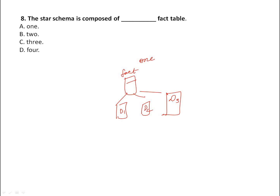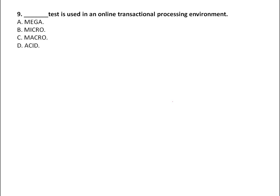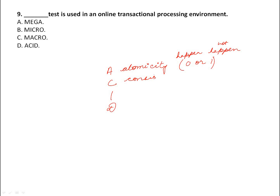The next question: what is used in an online transaction processing environment? The answer is ACID properties. ACID stands for Atomicity — a transaction either happens completely or not at all; Consistency — the value after the transaction should be the same everywhere in the database; Isolation; and Durability. We will discuss these in detail in future videos.